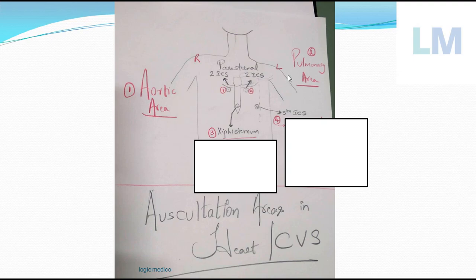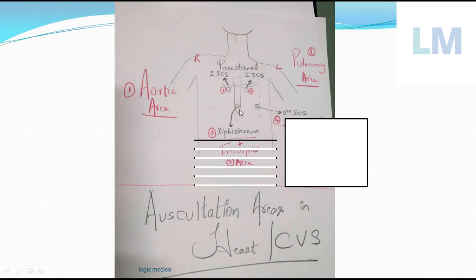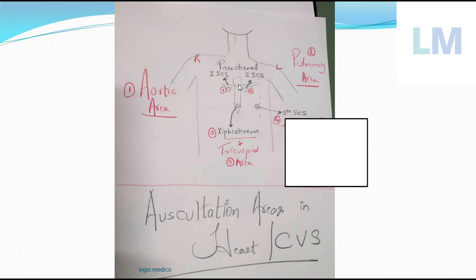The lowermost part of the sternum is called the xiphoid process. Between the body and xiphoid process is called the xiphisternal junction or xiphisternal joint. At that area, if you auscultate, you will hear the closure of the tricuspid valve much more clearly - therefore it's called the tricuspid area. It is at the lowermost part of the sternum in the midline.